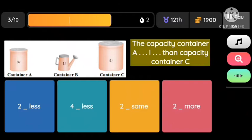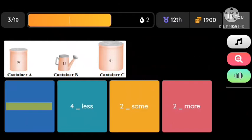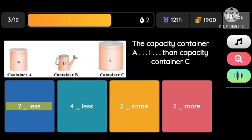Question: The capacity of container A is 1 liter, than capacity of container C... Option 1: 2 less, Option 2: 4 less, Option 3: 2 same, Option 4: 2 more.